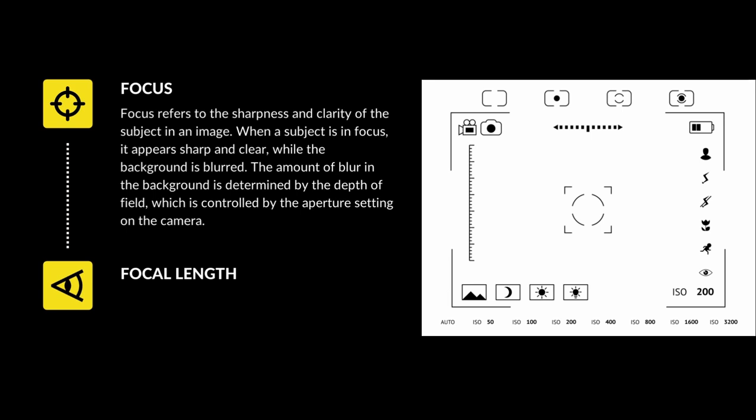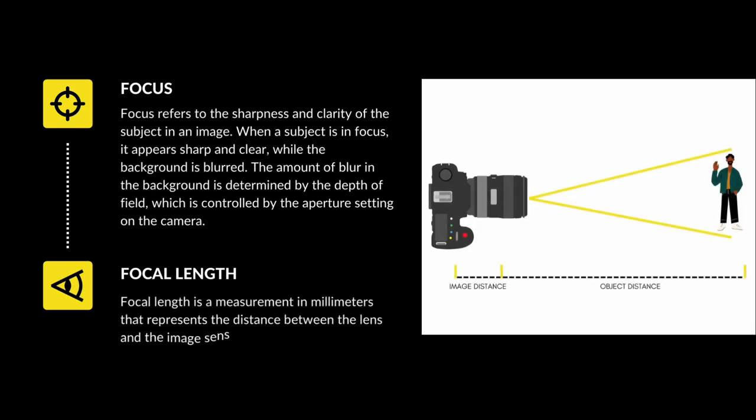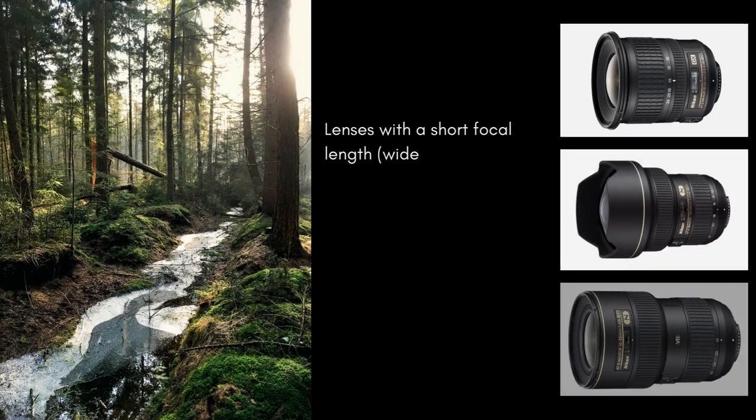The amount of blur in the background is determined by the depth of field, which is controlled by the aperture setting on the camera. Focal length, on the other hand, is a measurement in millimeters that represents the distance between the lens and the image sensor in a camera, and it determines the field of view and magnification of an image.